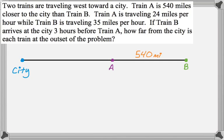I don't know how far they are from the city at all to begin with. That's actually the whole question. So I'm just going to give that a variable. I'm going to call it X and say that that's X miles. So A is definitely going to travel X miles. And then B is going to have to travel X plus 540 miles to get to the city.